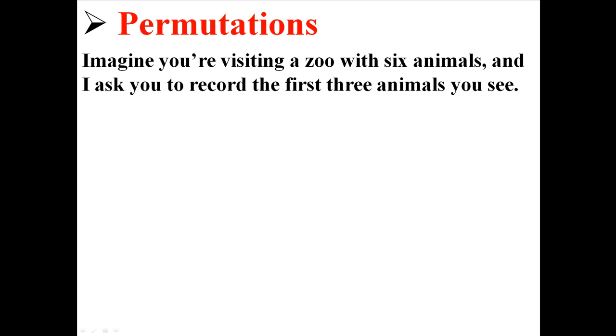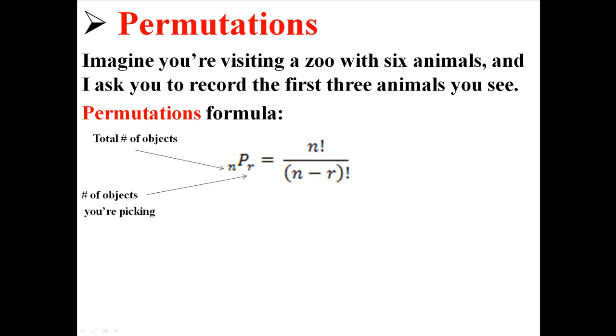So back to this example, there's actually a formula we can use to do this. Instead of counting things out like I did, we can just plug things into the formula. The nPr, where n is the total number of objects you're dealing with, and r is the total number of objects you're picking.